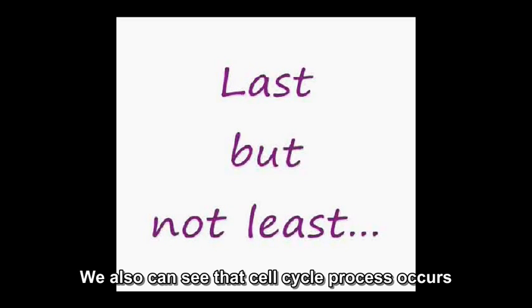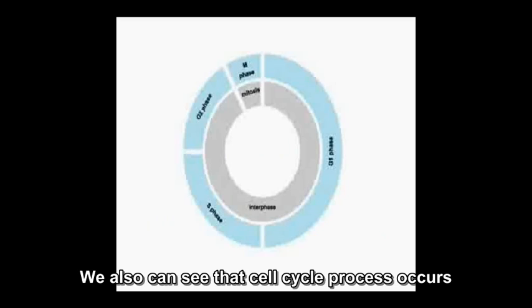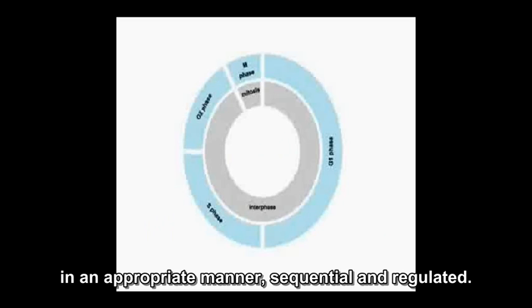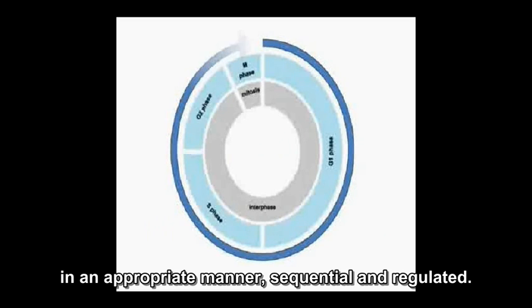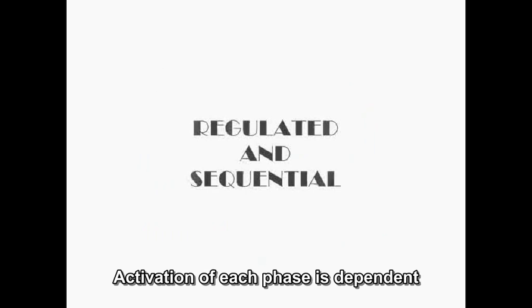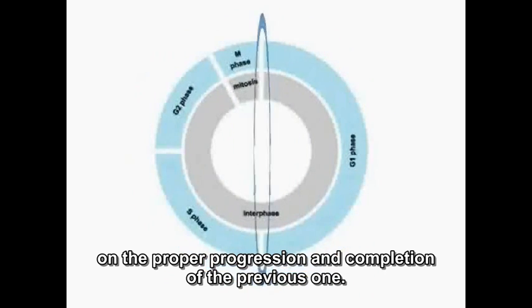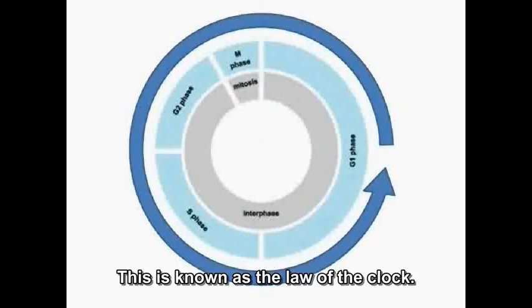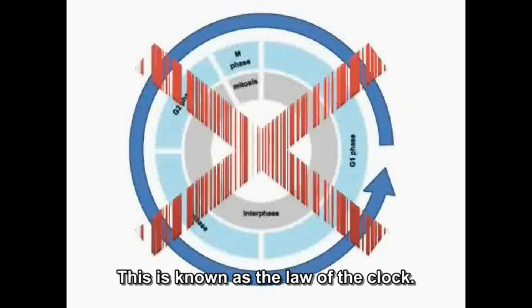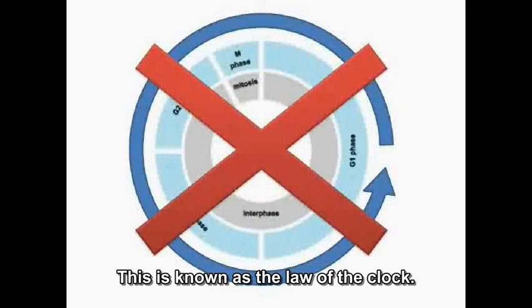We can also see that the cell cycle process occurs in an appropriate manner — sequential and regulated. Activation of each phase is dependent on the proper progression and completion of the previous one. This is known as the law of the clock.